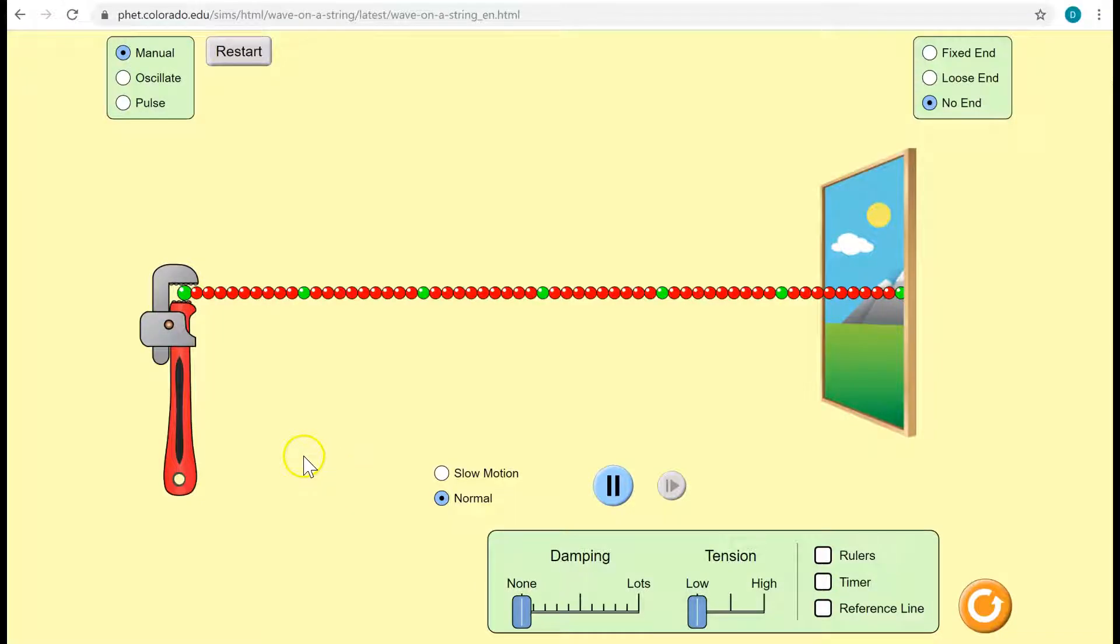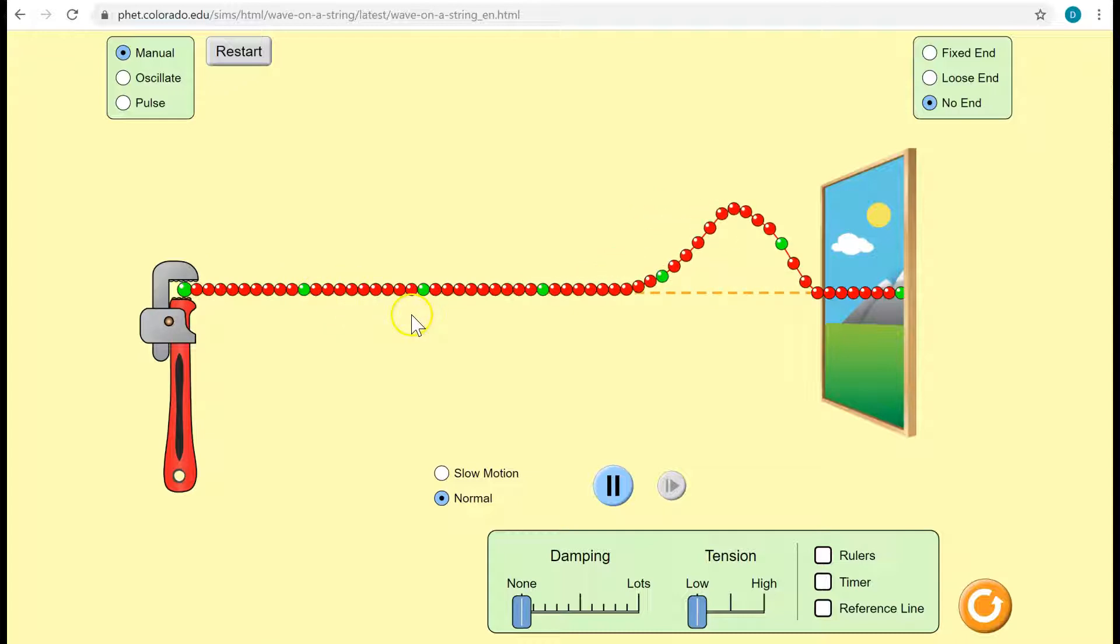Let's recap everything we know about waves. Here's a medium, it's a string. It consists of these particles shown as beads. If I pull this wrench upwards and then downwards, each particle is pulled upward and then downward in succession, and so that wave shape gets transferred through the medium.